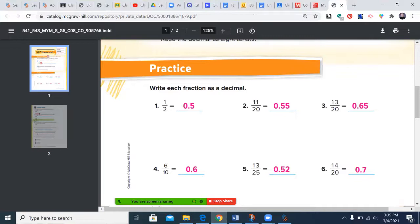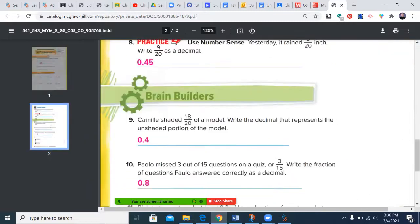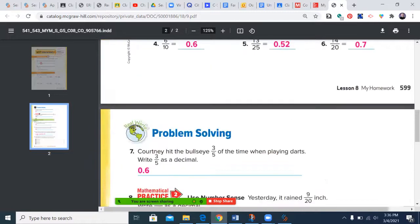One half became 5 tenths, so 0.5. Eleven twentieths became 55 hundredths, or 0.55. Six tenths is 0.6, and 52 hundredths is 0.52. Seven tenths came out to 70 over 100, but you can truncate that last zero and just have 0.7, or simplify to 7 tenths. Generally, if it's over 100 you have two digits; if it's over 10 you have one digit, as you can see going down the rest of the assignment.